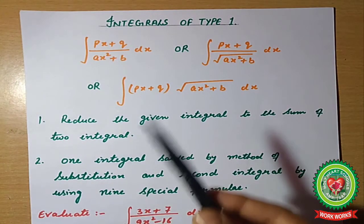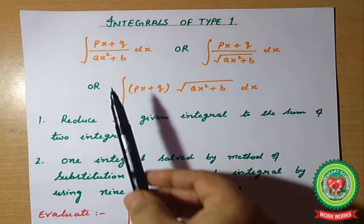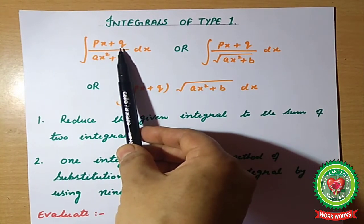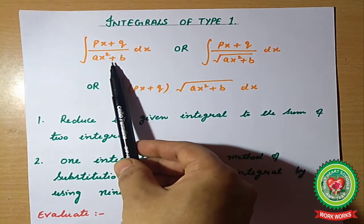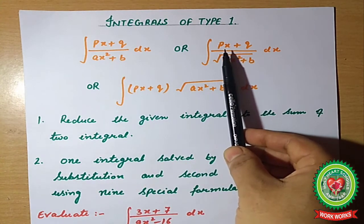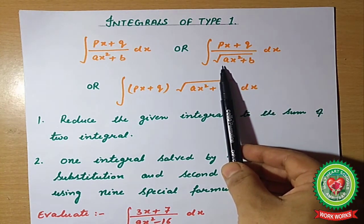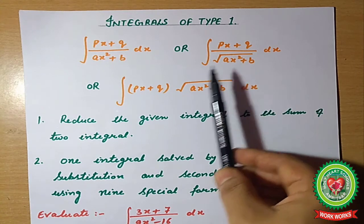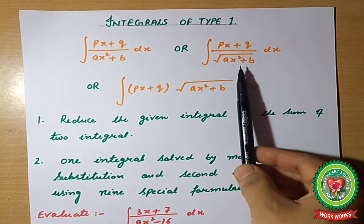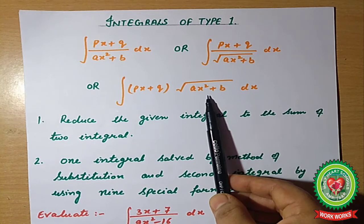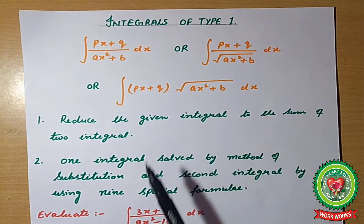For integral of Type 1, we have a statement in the form of px plus q — a binomial term in the numerator — and a quadratic in the denominator. Similarly, px plus q may appear in the numerator with a square root in the denominator. These two forms may appear as fractions or as products.